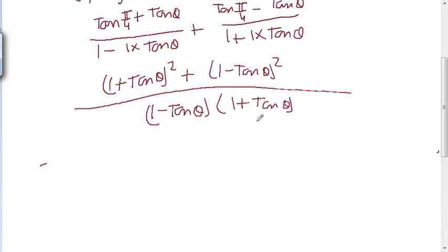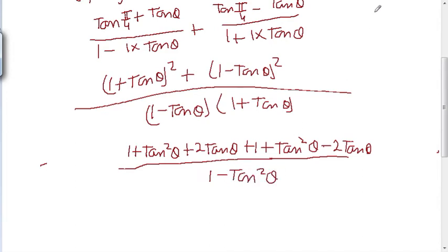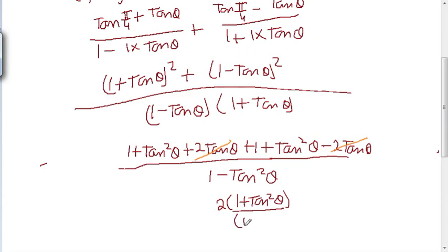अब इसको expand करेंगे। ऊपर आजाएगा: using (a+b)(a-b) = a²-b², नीचे आजाएगा 1 - tan²θ। Plus का 2tanθ और minus का 2tanθ cancel हो जाएगा। tan²θ + tan²θ = 2tan²θ। तो 2 common निकालने पर आजाएगा 2(1 + tan²θ) upon (1 - tan²θ)।